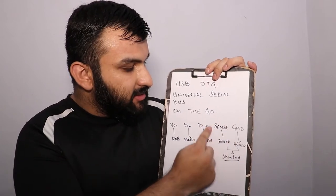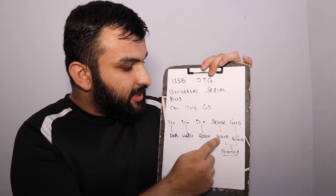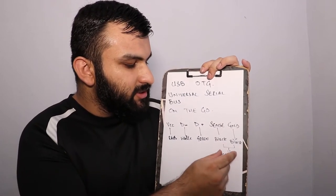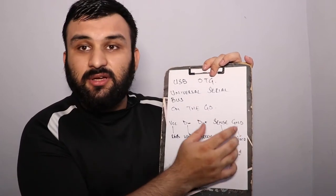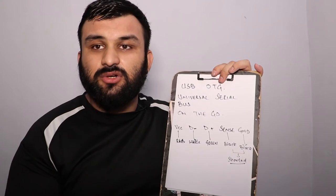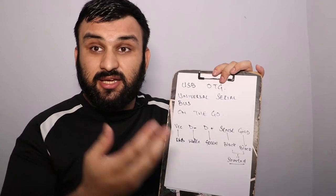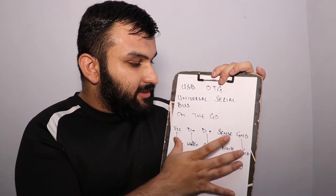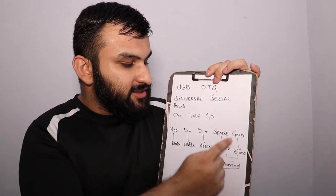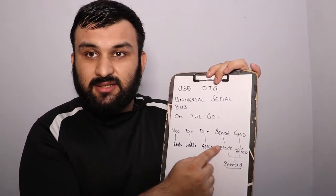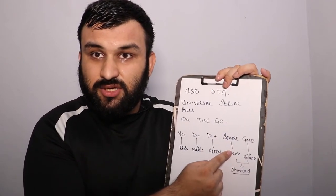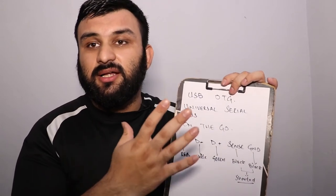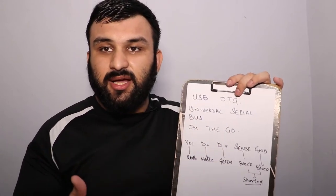What is also there is a sense wire. That sense wire is basically shorted if a data cable is connected to your phone. In the case of OTG, when it's connected, the sense wire detects it — the sense wire detects if there is an OTG connected to your smartphone — and your smartphone lights up.